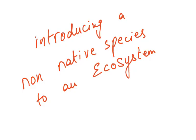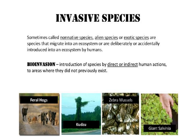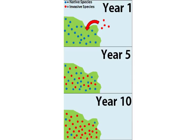The next topic is introducing a non-native species to an ecosystem — also called invasive species or alien species. These are species that migrate into an ecosystem or are deliberately or accidentally introduced by humans, a process called bioinvasion. A diagram shows native species in blue: when an invasive species shown in red is introduced, by year five the red population has increased significantly, and by year ten the native blue species have become extinct while invasive species dominate.